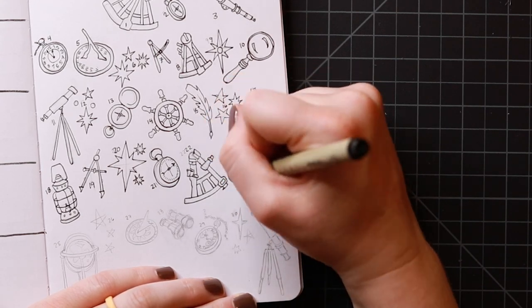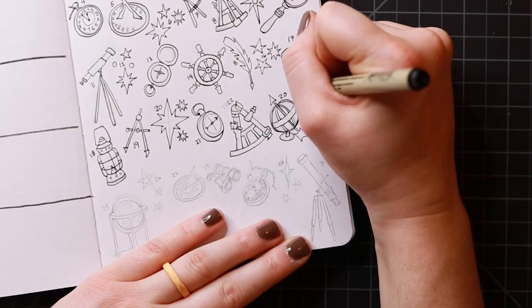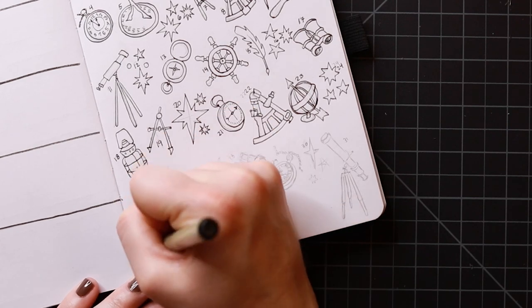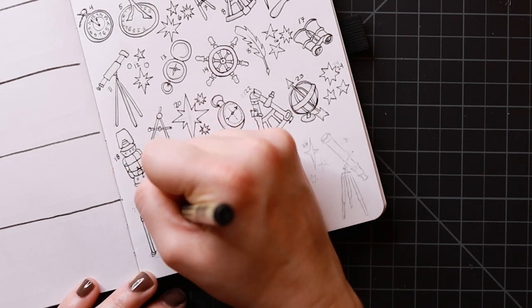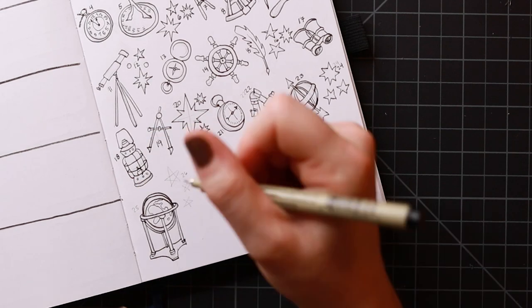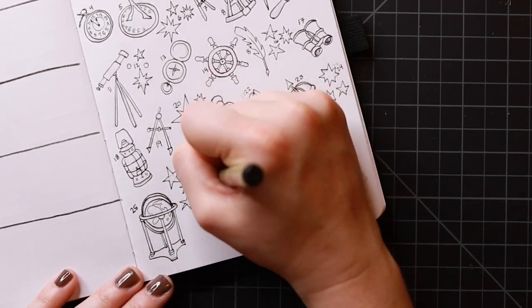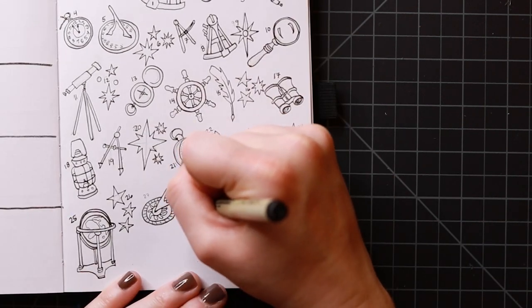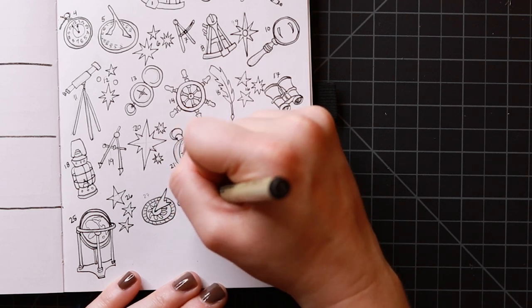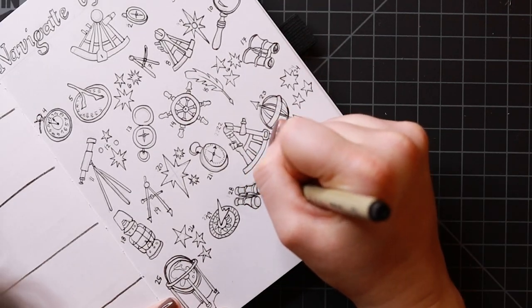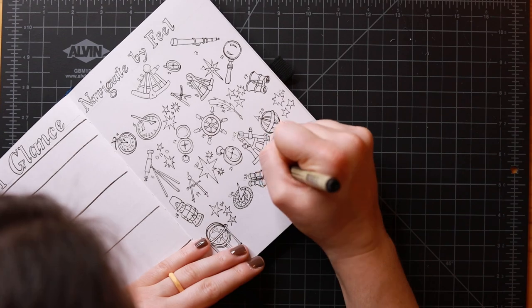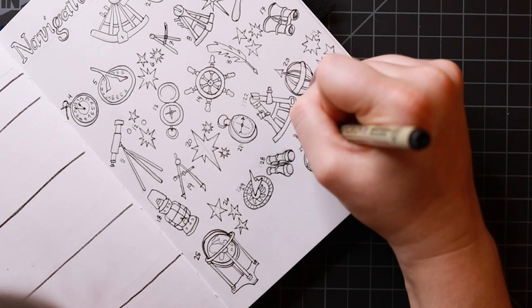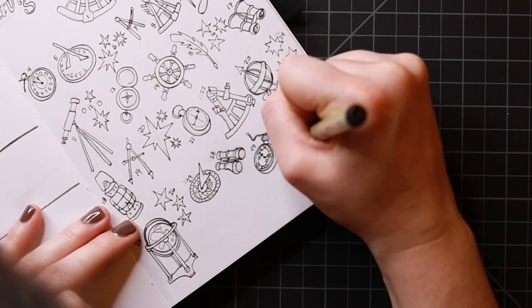But yeah, so I've got sundials and compasses, both in terms of the directional compass, but also the compass that's like to draw circles, you know, apparently that's also called a compass. It annoys me that it's one word for two different instruments, but whatever. A ship steering wheel, a quill, binoculars, a lantern, some pocket watches, a globe, some stars, things like that. So yeah, putting way too much detail into something that I'm just going to end up coloring over. It's fine. It's fine. Adult coloring books are fun.